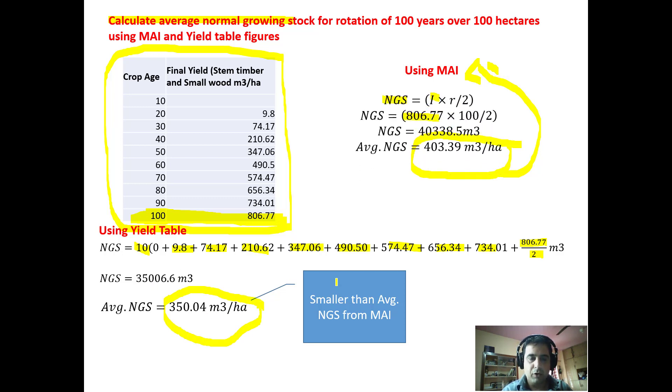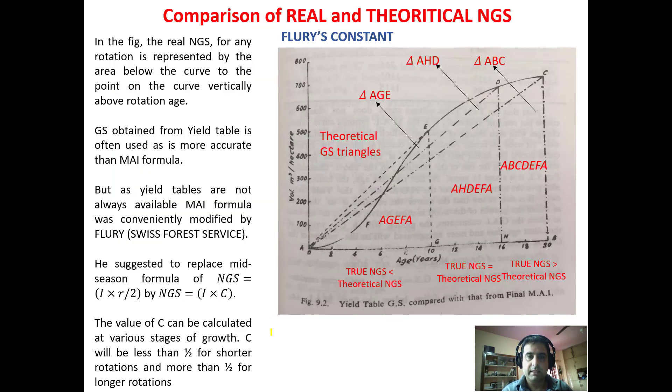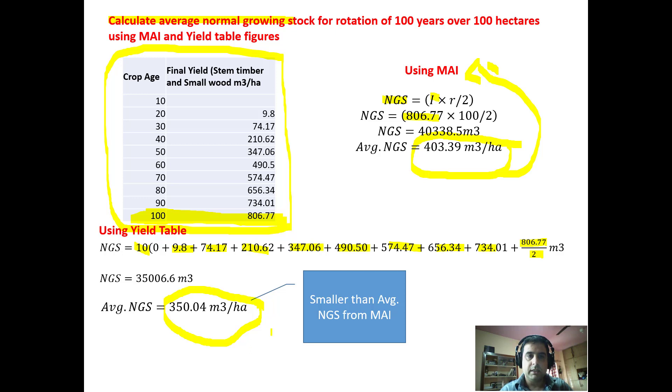By comparing both the figures, we can observe that the values of growing stock are smaller when using the yield table method than using mean annual increment method. So that's all about the growing stock using MAI method and yield table method. Thank you.